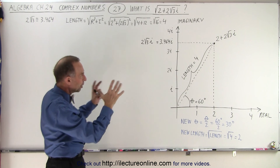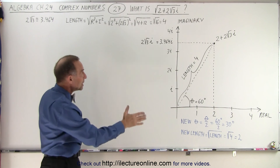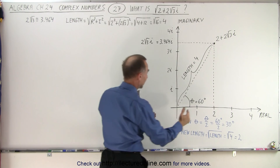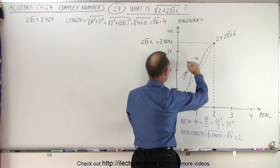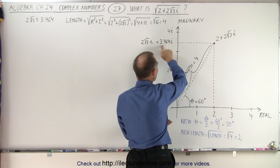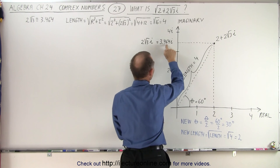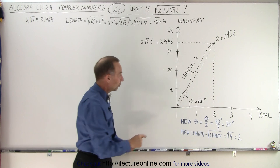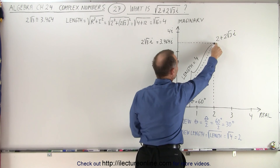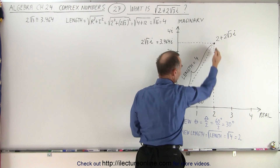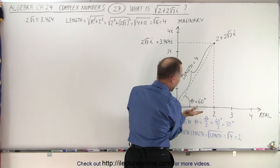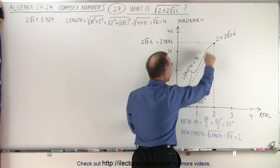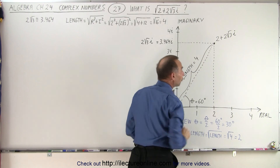Let's put that number onto the real-imaginary plane. Notice that the real part is equal to 2, and the imaginary part is equal to about 3.464i, because that's approximately equal to 2 times the square root of 3. So when we find the point on the plane, the angle from the origin to the point is equal to 60 degrees and the length is equal to 4.